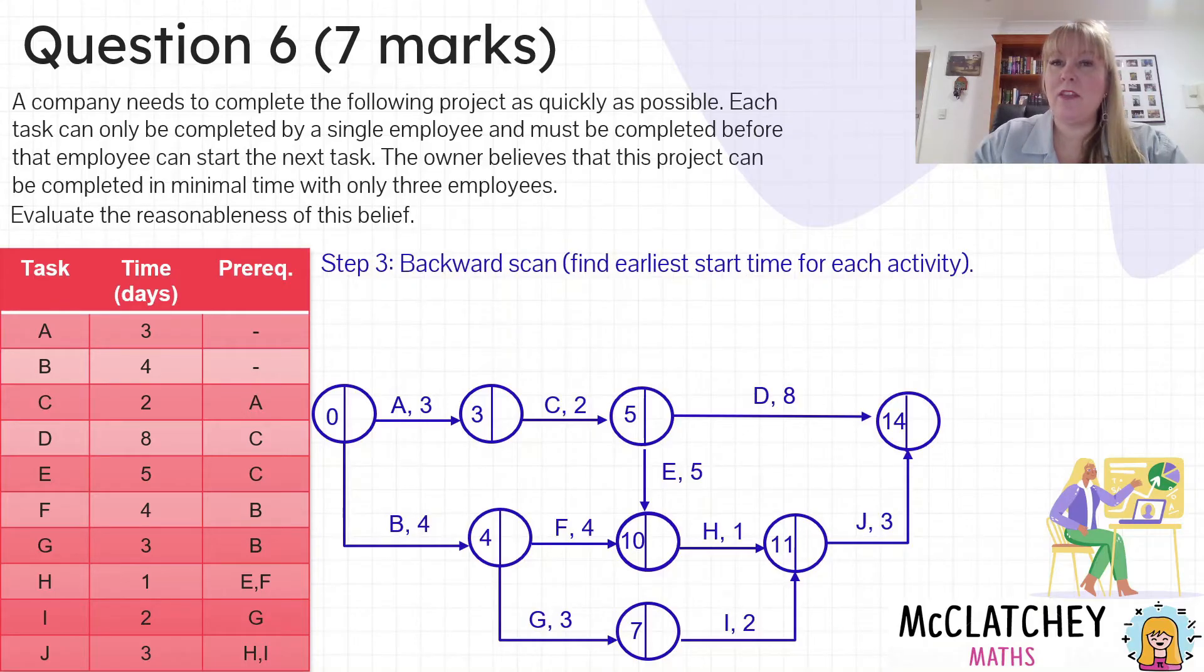So now it's time to backward scan through the network. We're going to be filling out the right hand side of each vertex. Starting on the very far right we start with the same number because they're on the critical pathway, so they must be the same numbers. We're going to move along different pathways here and subtract the value of each edge as we're moving backwards. 14 take away three gives me 11. Then I'm going to move along the bottom pathway and I'm filling out the easy stuff first.